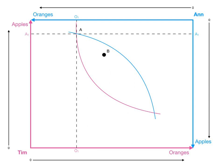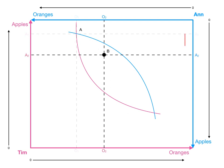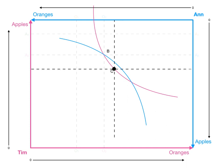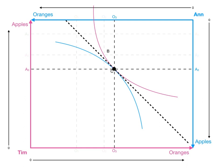Let's say they move to point B. Ann is going to give up oranges to obtain apples, and Tim is going to give up apples to obtain oranges — both of them move to a higher indifference curve. Ann moves towards Tim's origin, Tim moves towards Ann's origin, and they've reduced the size of that lozenge. Both are better off. They can even move one more point — let's say along Tim's indifference curve. Tim is no worse off and Ann is going to improve her lot, gaining more apples and giving up a few oranges, while Tim gives up apples and gets more oranges. Now they've maximized their allocative efficiency of apples and oranges. They can't do any better than this point — any movement from here makes one of them better off and the other one worse off. So this is the best they can do.